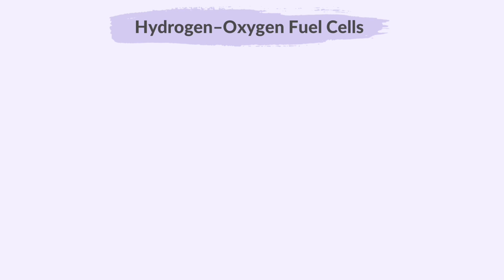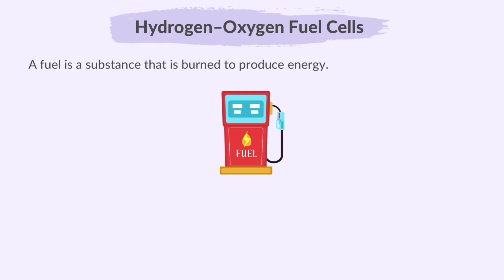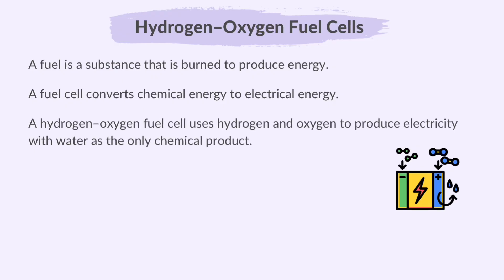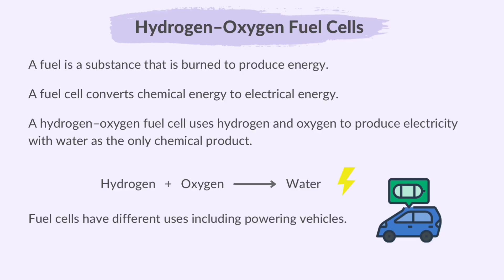Finally, let's learn about hydrogen-oxygen fuel cells. A fuel is a substance that is burned to produce energy. A fuel cell converts chemical energy to electrical energy. A hydrogen-oxygen fuel cell uses hydrogen and oxygen to produce electricity, with water as the only chemical product. So hydrogen is the fuel, and combining with oxygen gives water, while energy is also released. Fuel cells have different uses, including powering vehicles.